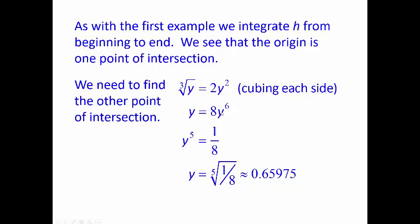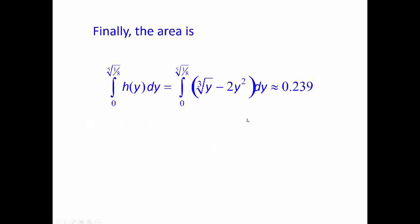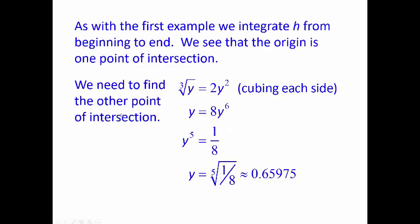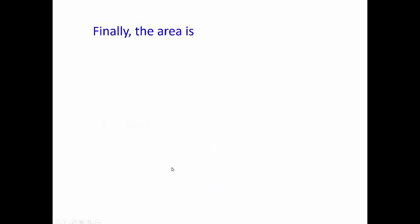Solving for y: you get y to the fifth equals one-eighth, by dividing y over and dividing eight over. So the other y-coordinate is the fifth root of one-eighth. We'll leave it as that, but if you plug it into your calculator you get the decimal value. Finally, the area is found by integrating along y from zero to the fifth root of one-eighth of the height h(y) dy.